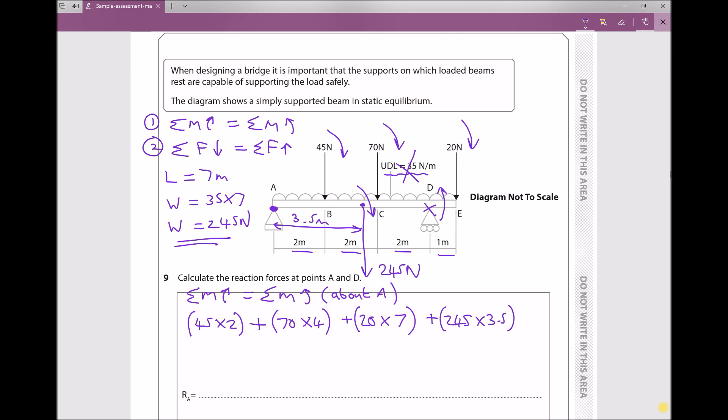And not to forget the weight which is 245 newtons at a distance of 3.5 meters from the pivot. Now all of that is going to equal our reaction at D, so RD times its distance from the pivot. And we can see from the diagram that that's 6 meters from the pivot, so 6RD is the same as 6 times RD.